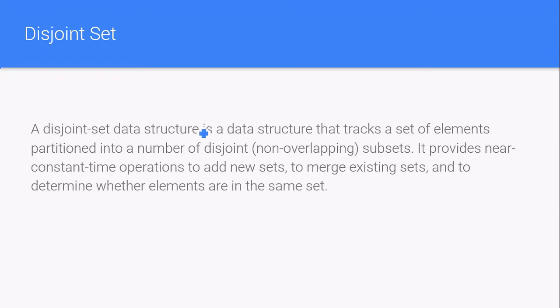A disjoint set data structure is a data structure that takes a set of elements partitioned into a number of disjoint or non-overlapping subsets. And it provides near constant time operations for the union of two sets and to find whether an element is belonging to the same set or not.